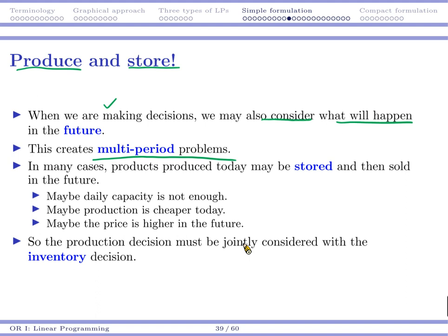This is going to create some multi-period problems. In many cases, for example, when we are making products, those products produced today may be used to be sold in the future if we carefully store them as inventory. We may do that with several reasons. So first, daily capacity may not be enough.